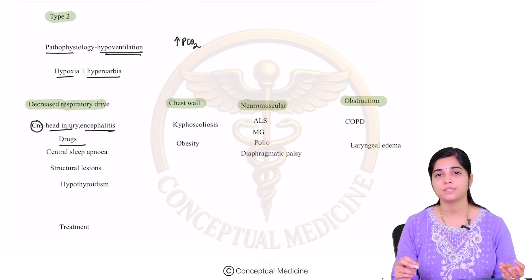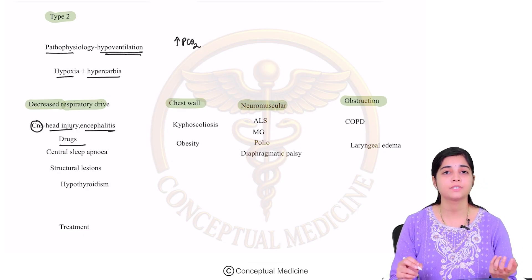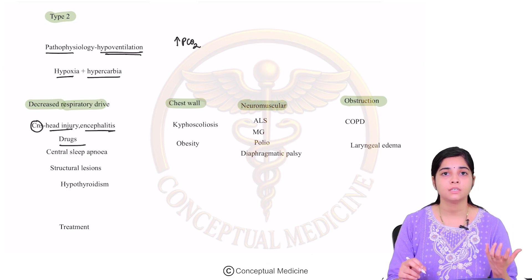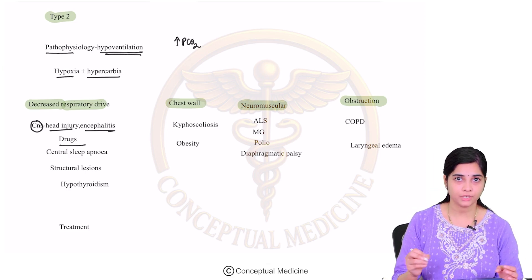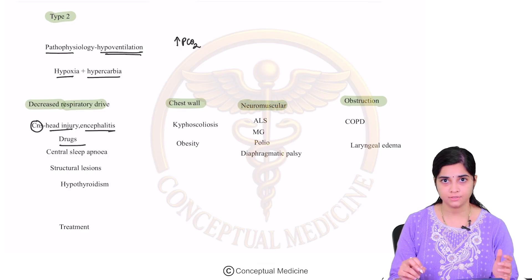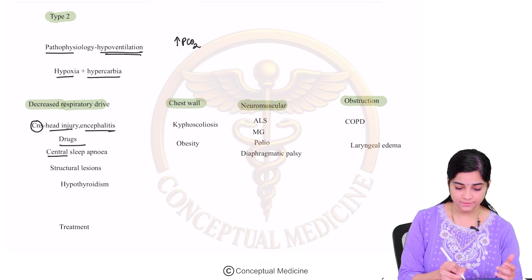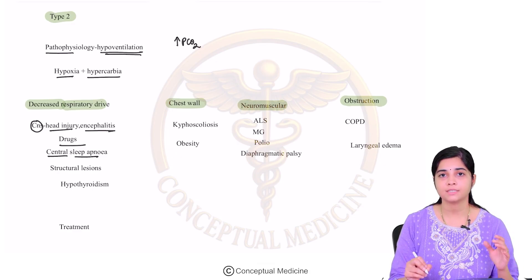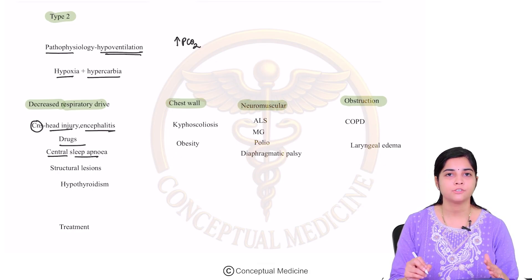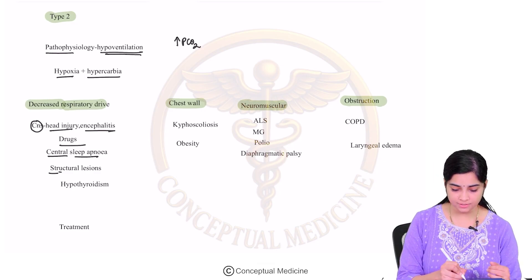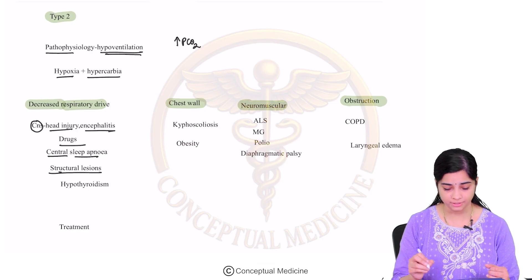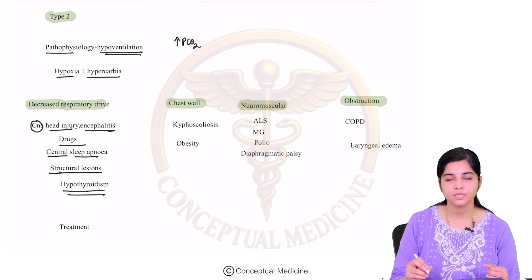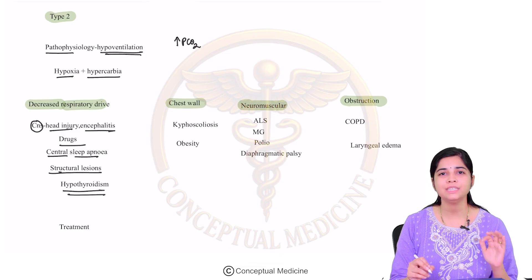Causes include encephalitis, drugs especially sedative hypnotics — excessive sedation can cause decreased respiratory drive — and morphine can also decrease respiratory drive. Central sleep apnea syndromes, where there is a basic problem with sleep centers causing cessation of breathing and carbon dioxide accumulation. Structural lesions affecting the medulla and hypothyroidism can also cause PCO2 retention in severe conditions like myxedema.